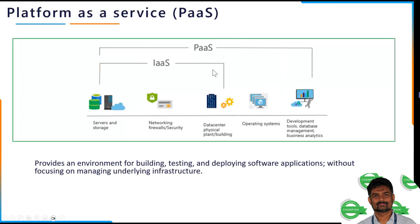The second is Platform as a Service. The operating system is managed for you — for example, Linux and Windows are patched and maintained. Deployment toolsets are provided. Software like a website, IIS server, or Apache server is managed. The database is also managed. This is Platform as a Service.